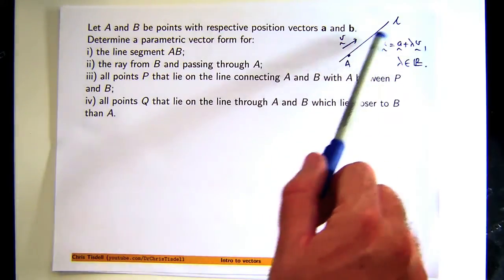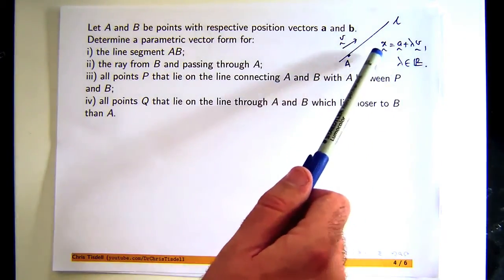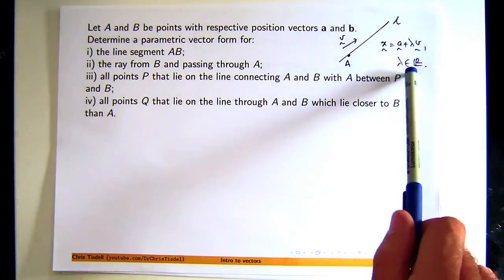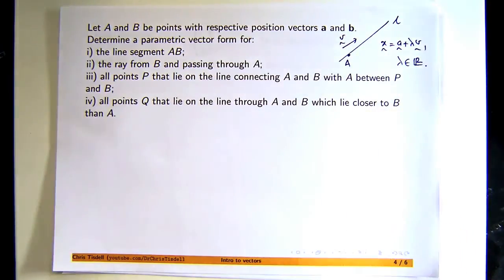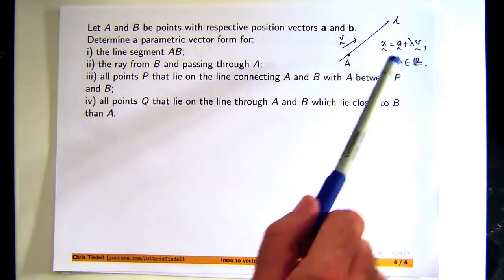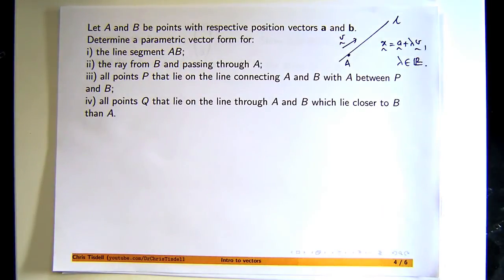Now the important thing there is this lambda. The lambda is like a variable here or a parameter. So really, the vector X is a function of lambda. It's a function that gives you a vector as the output, and lambda is the variable or the parameter. And just by restricting lambda to certain sets, you can get all kinds of different lines, line segments, rays, all sorts of stuff.